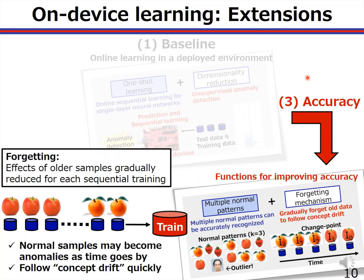The third extension is about accuracy of the anomaly detection. We introduce a forgetting mechanism to forget old data and follow concept changes quickly. The normal samples may become anomalies as time goes by. As shown in this figure, at the beginning oranges appear frequently, but later apples become the majority. By using the forgetting mechanism, effects of older samples like oranges are gradually reduced every time a new sample comes, so that we can follow such concept drift quickly. We propose a forgetting mechanism that can co-exist with the simplified computation method proposed in this paper.